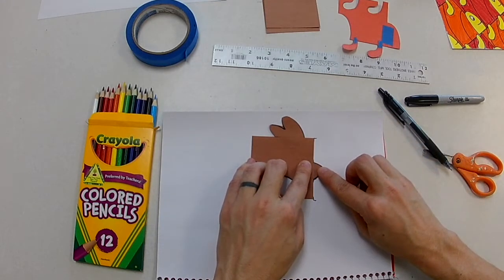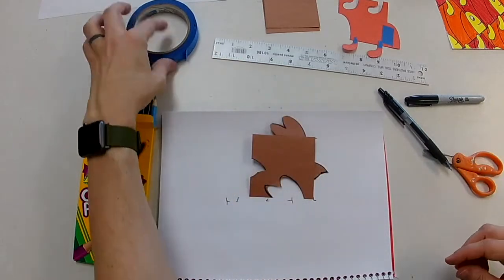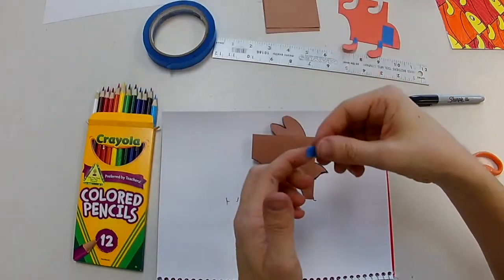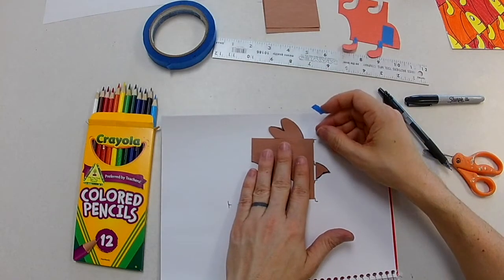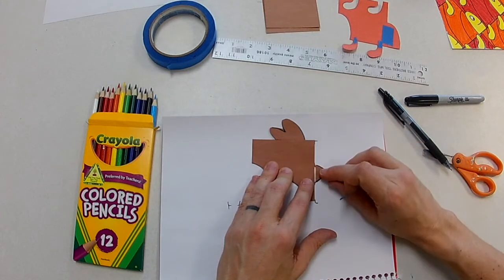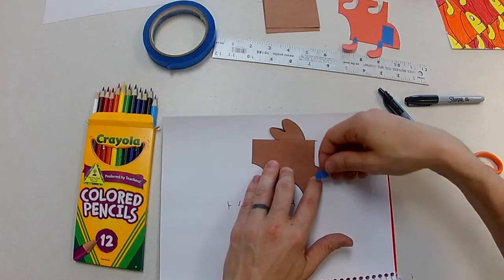Then I put his beak right where I marked it off at. Get a small piece of tape. All right, line it back up. Make sure it's butting up right against it, no overlapping, then I just tape it.